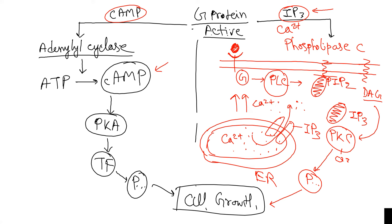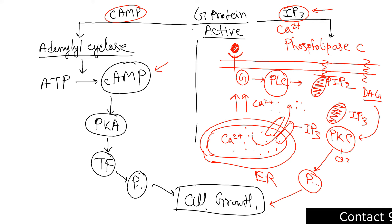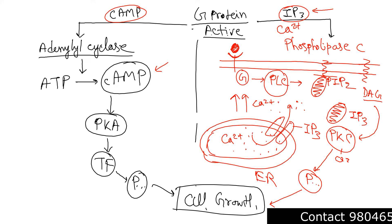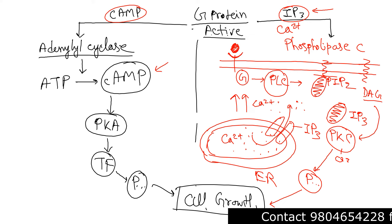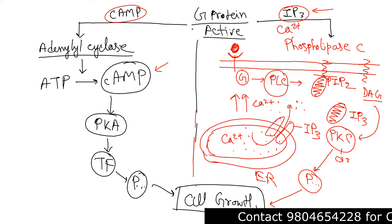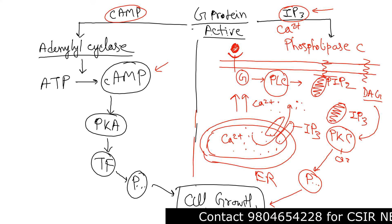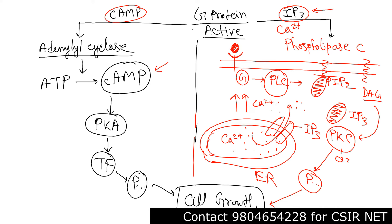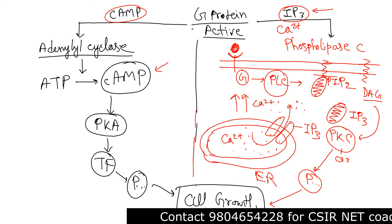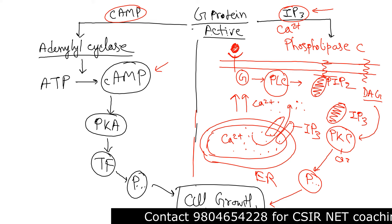So what is the difference between both pathways? In the cyclic AMP pathway, adenylyl cyclase is activated and cyclic AMP is the secondary messenger. In the IP3 pathway, phospholipase C is the enzyme activated and IP3 acts as the messenger. But both pathways have the same ultimate goal — cellular growth and proliferation.